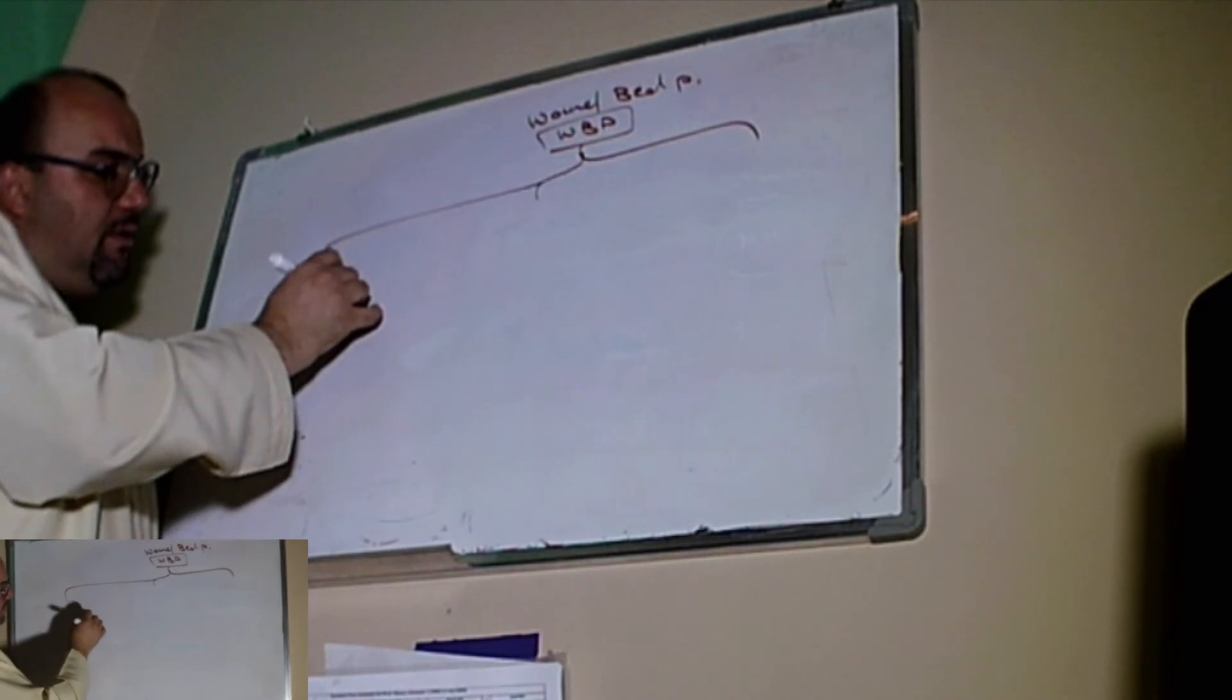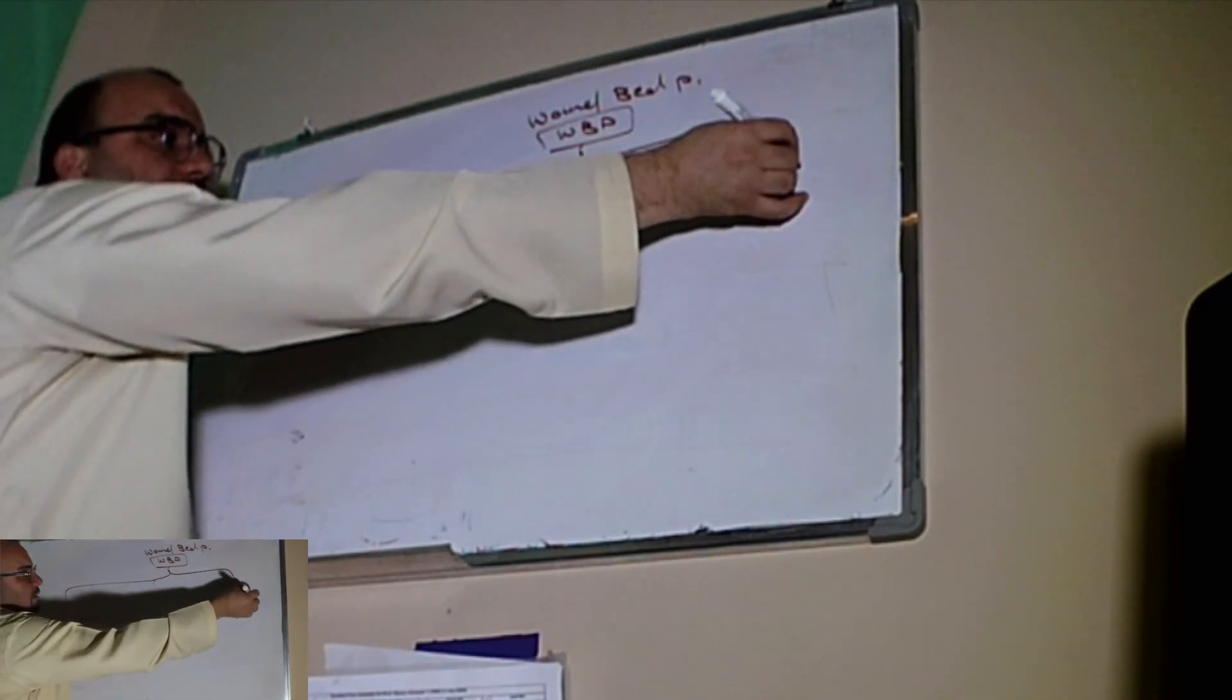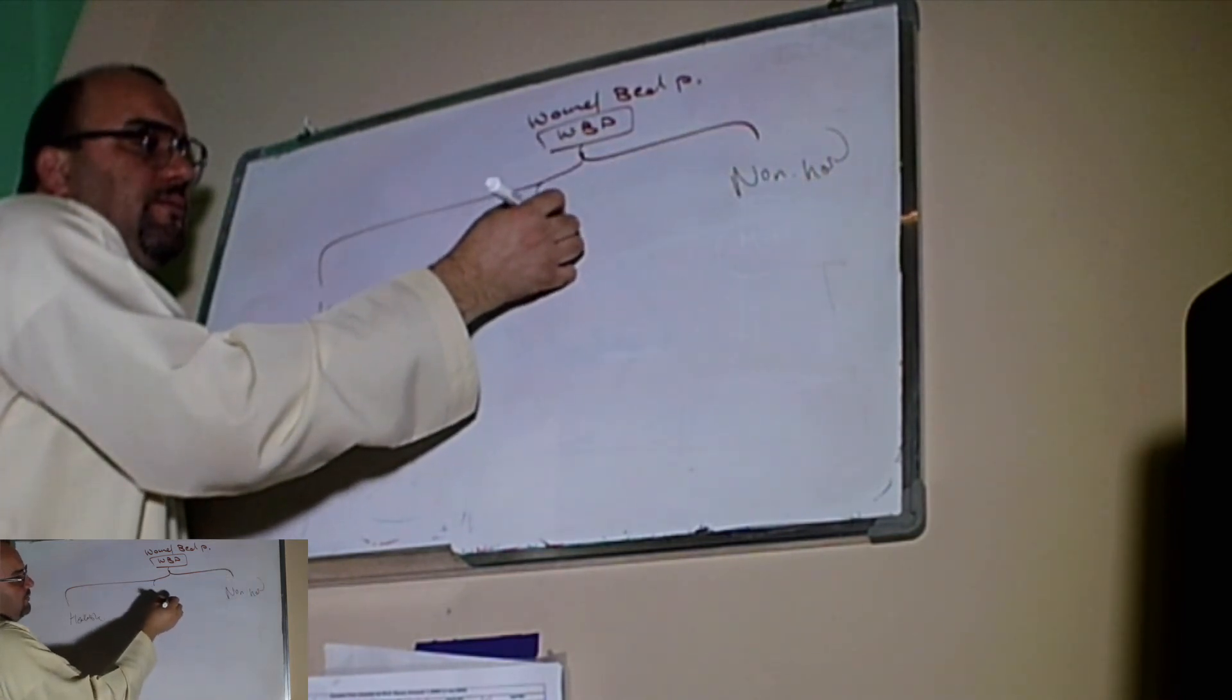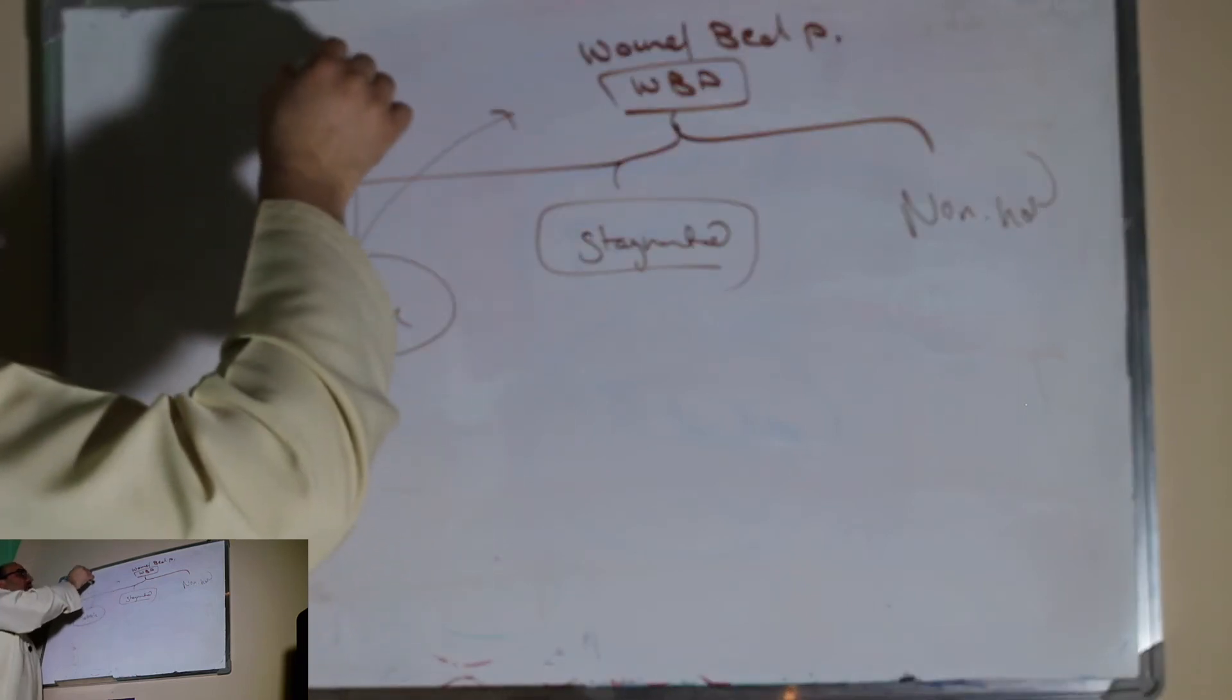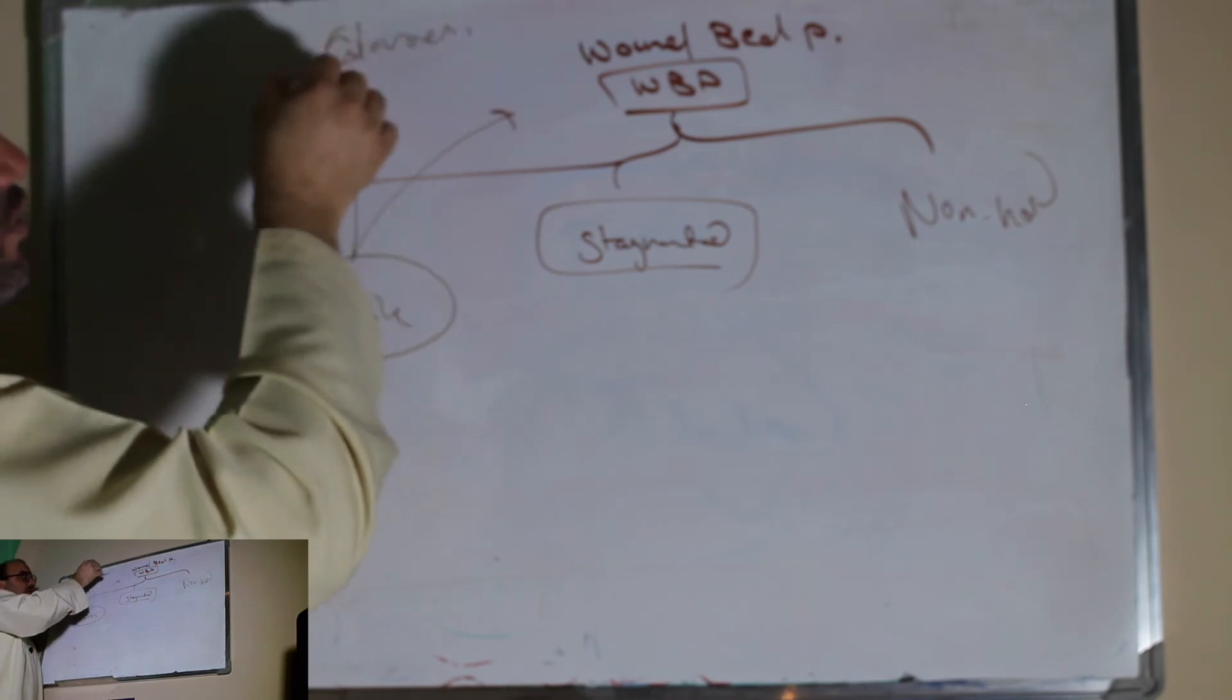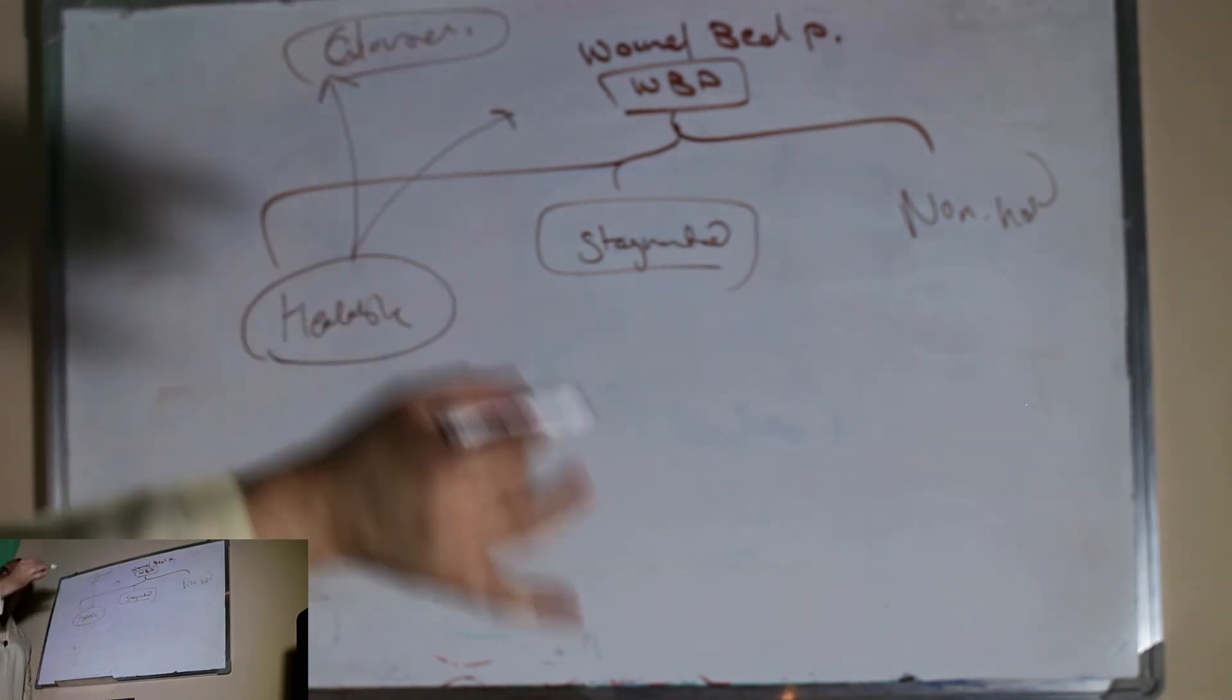Healable wounds, non-healable wounds, and stagnated wounds or something in the middle. Healable means even these wounds are chronic, we are able to reach the closure of the wound. So the management here will be a little bit different.